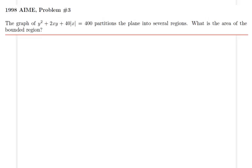Hello everyone, in this lecture we will be solving 1998 AIME problem number 3. The graph of y² + 2xy + 40|x| = 400 partitions the plane into several regions, and that's because of that absolute value. What is the area of the bounded region?